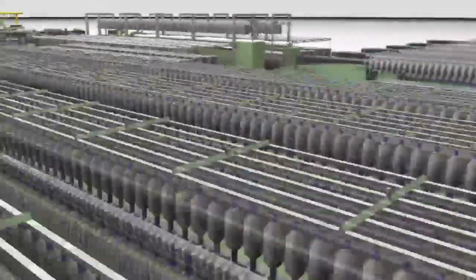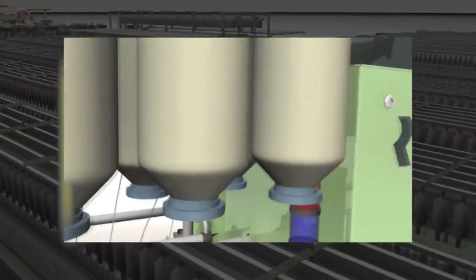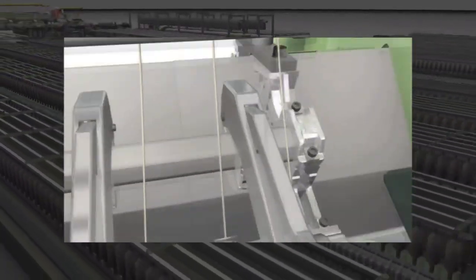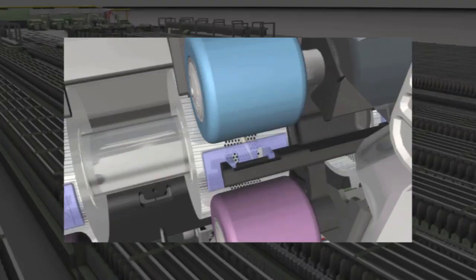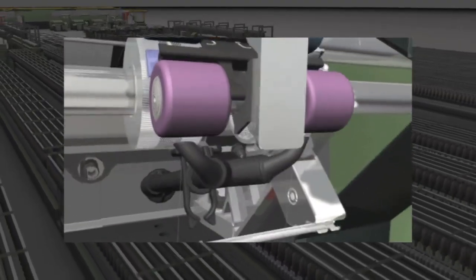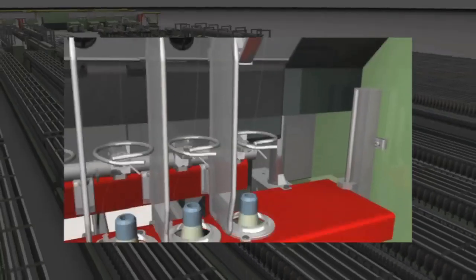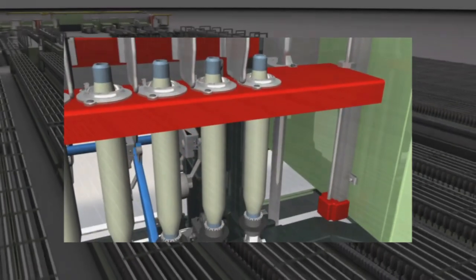The roving enters the drafting system of the compact spinning machine, where it is drafted to the desired yarn count. Several hundred twists per meter give the yarn its final form, and thus the desired tensile strength to prevent breaking.